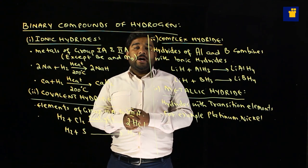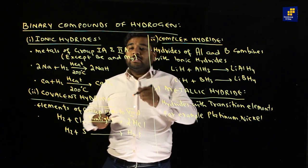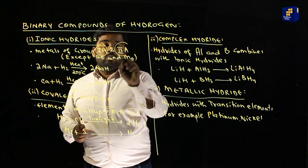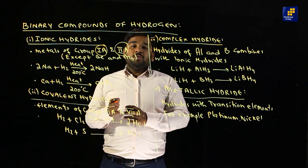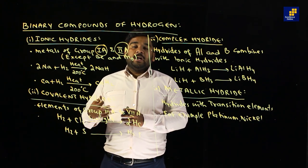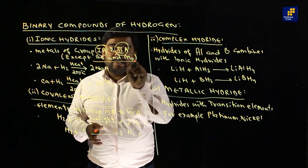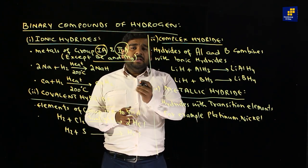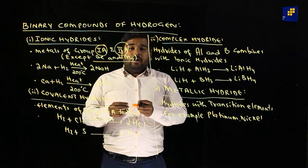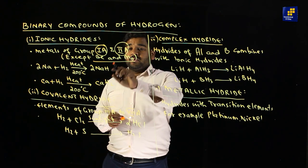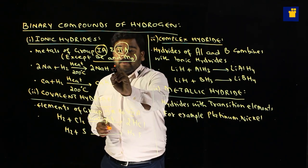The first binary compound type is ionic hydride, formed through ionic bonding. These are formed by Group 1A and Group 2A members, with the exception of beryllium and magnesium, which do not form ionic hydrides. Beryllium and magnesium instead form polymeric hydrides.